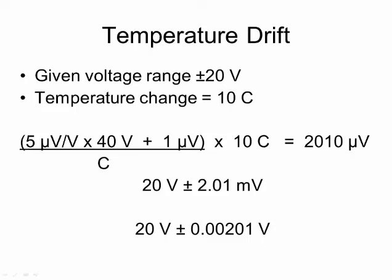We can calculate the expected temperature drift by multiplying the voltage range — 40 volts — times 5 parts per million (i.e., 5 divided by 1 million), adding 1 microvolt, and multiplying the product by the temperature change of 10 degrees Celsius. The result is 2010 microvolts, which is the same as 2.01 millivolts. So at full scale, the temperature drift would be expected to produce an uncertainty of plus or minus 2 millivolts.